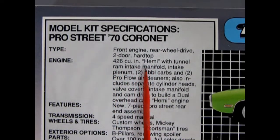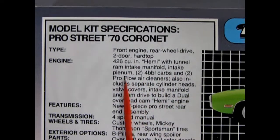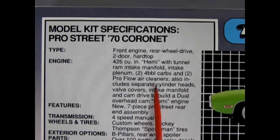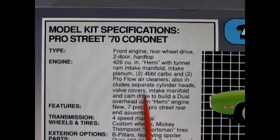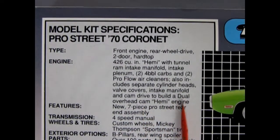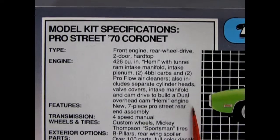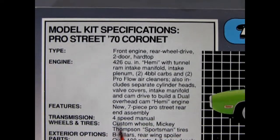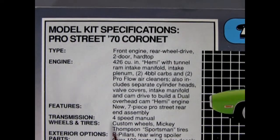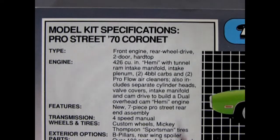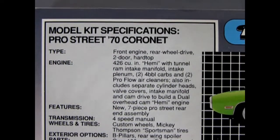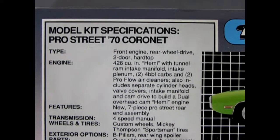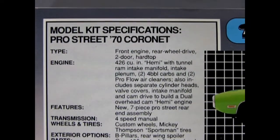Engine 426 cubic inch Hemi with tunnel ram intake manifold, intake plenum, two four barrel carburetors and two Pro Flow air cleaners. Also includes separate cylinder heads, valve covers, intake manifold and cam drive to build a dual overhead cam Hemi engine. Features new seven-piece Pro Street rear-end assembly, transmission four-speed manual, wheels and tires, custom wheels, Mickey Thompson sportsman tires, exterior options, B pillars, rear wing spoiler. Parts over 100 groovy parts, full-colored decals, paint and cement are not included.